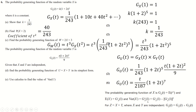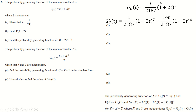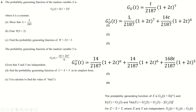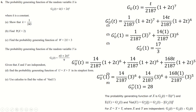To find Var(U), we use the formula from the formula book involving G'(1) and G''(1). Differentiating G_U(t) using the product rule gives G'(t). Differentiating again gives G''(t). Evaluating G'(1) and G''(1) by substituting t = 1, then substituting into Var(U) = G''(1) + G'(1) − [G'(1)]² gives the final variance.